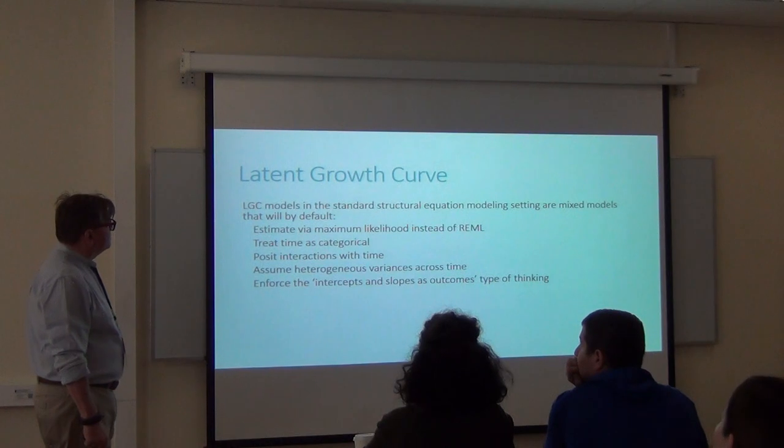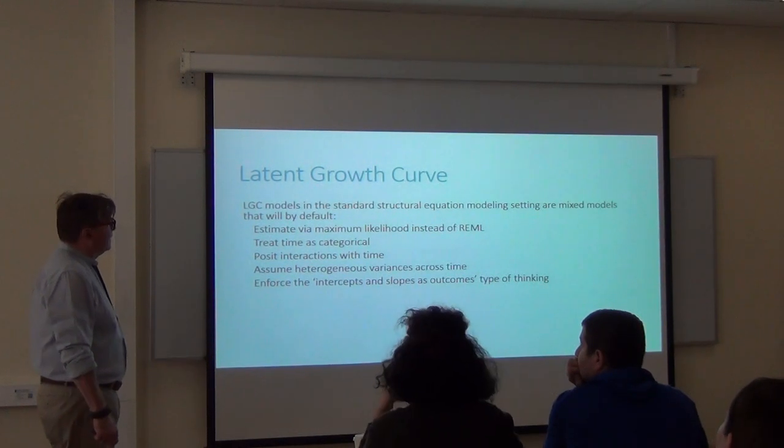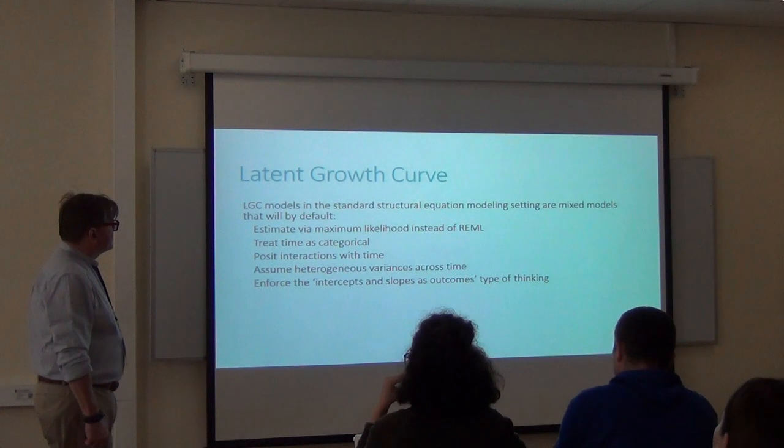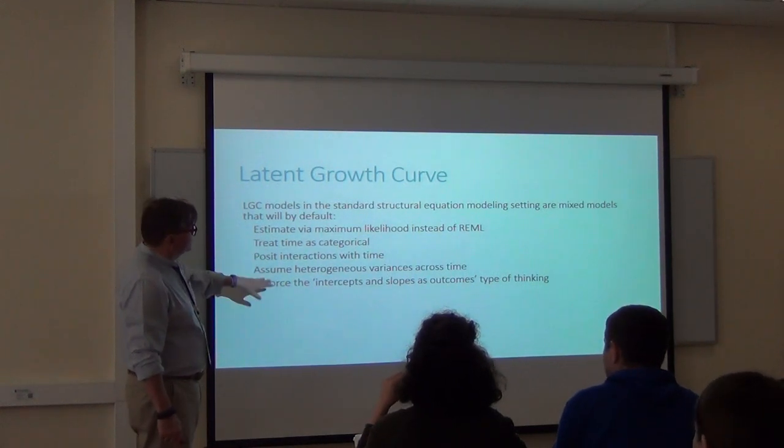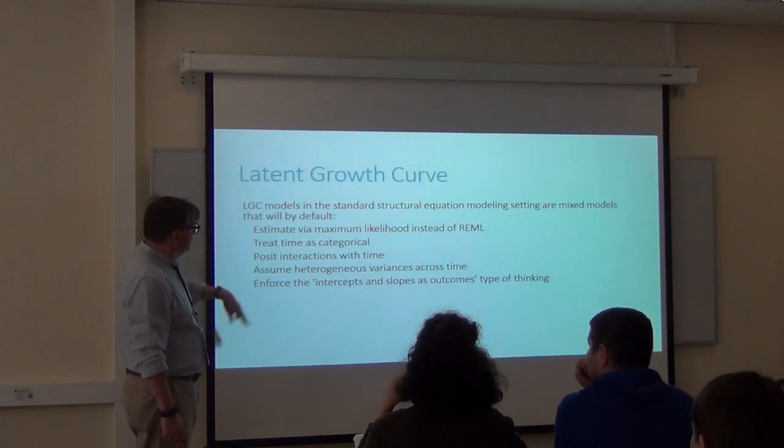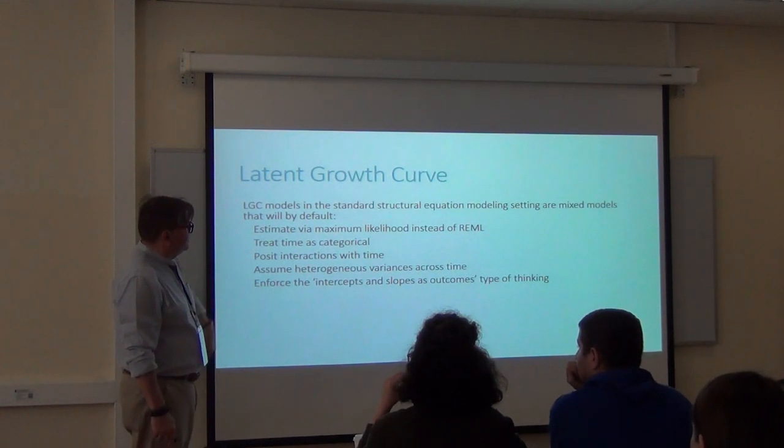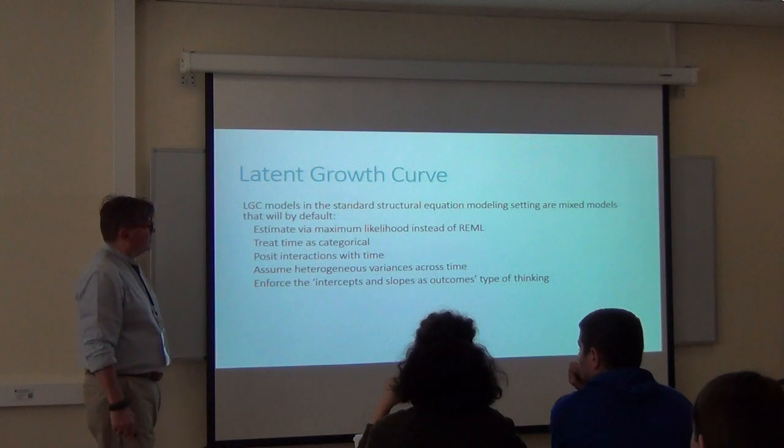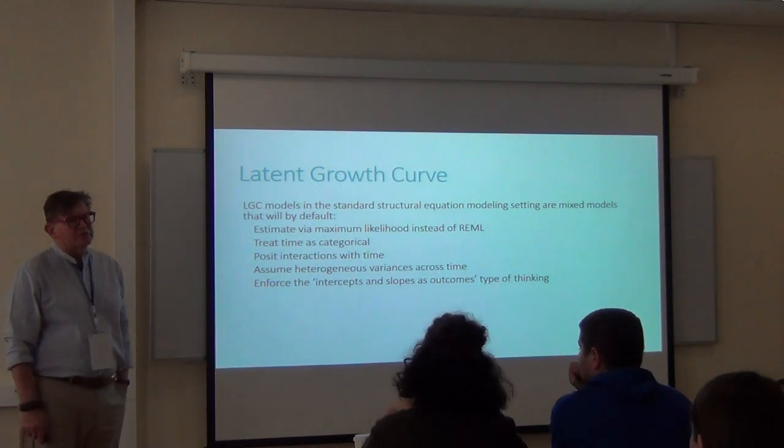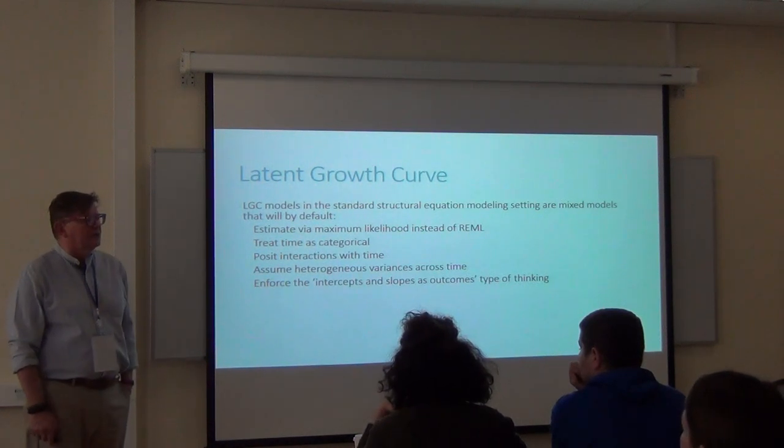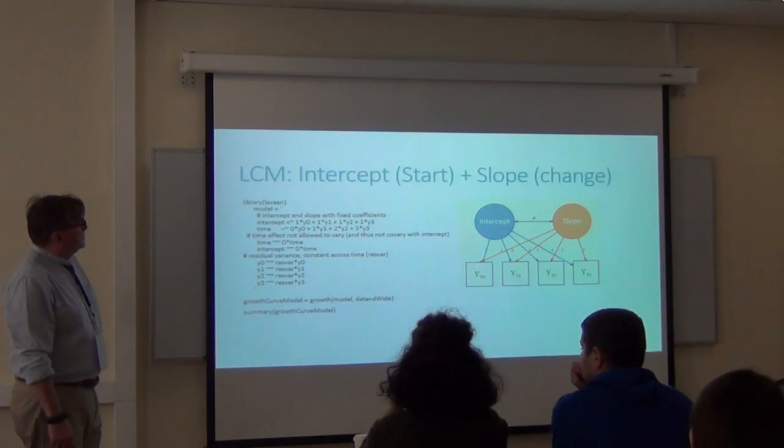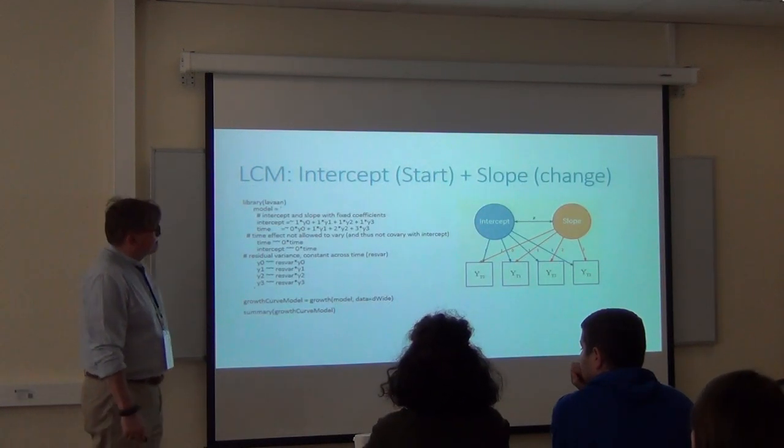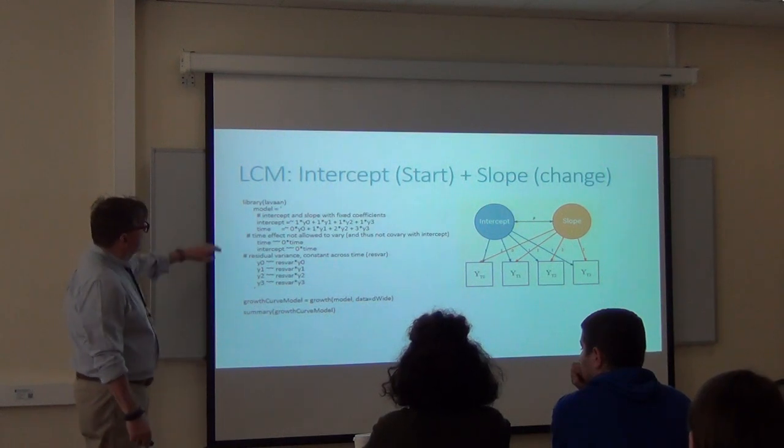Here's my measure time zero, time one, time two, time three. And the intercept is constant, it's set up to be constant across time. My changeability has to be zero at the beginning, and then here's my first unit of time, the second unit of time, and the third unit of time. These two are correlated. If you start high, you probably can't change except down. If you start low, you probably can't change unless it's up. There's often times an inverse relationship here.